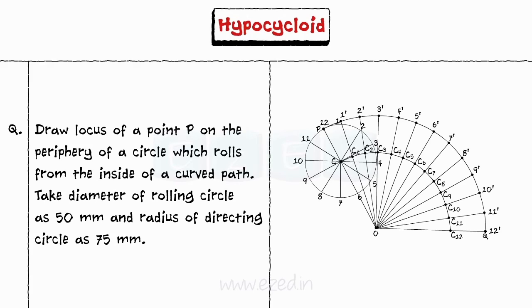Step 7: From points 1, 2, 3, 4, 5, 6 on the circle, draw an arc through each of the specified points.